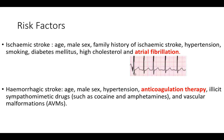Atrial fibrillation is important because it is treatable — anticoagulation significantly reduces stroke risk. Always look for AF early and anticoagulate stroke patients who have it; an irregularly irregular heart rate and absent P waves on ECG are the key findings. Hemorrhagic stroke shares similar vascular risk factors but also includes anticoagulation therapy, recreational drug use, and family history of vascular malformations as additional risk factors.